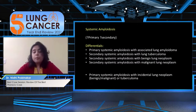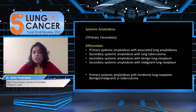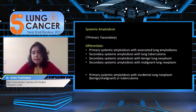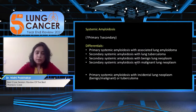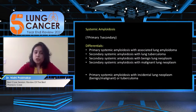Secondary systemic amyloidosis due to lung neoplasm is known, but in this patient the lung mass had grown only one centimeter in three years, creating a diagnostic dilemma. Interventional radiology was planned for CT-guided biopsy. It was also considered that the lung neoplasm and primary systemic amyloidosis might be unrelated.